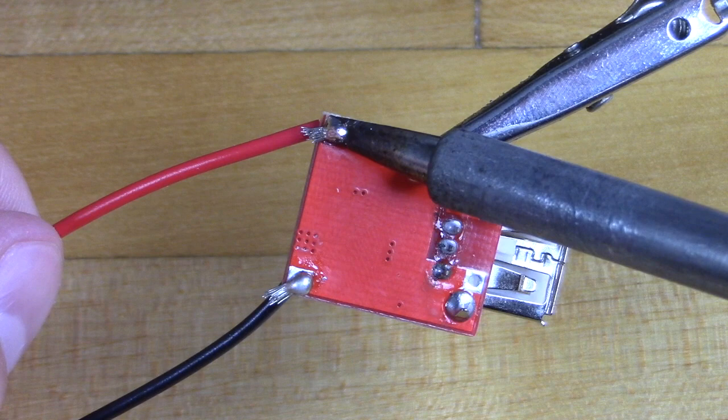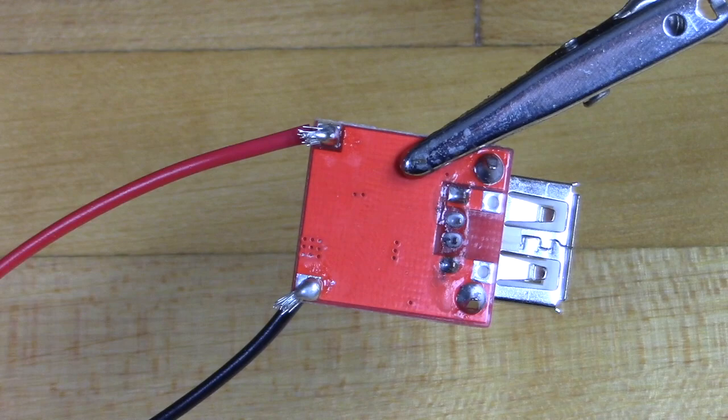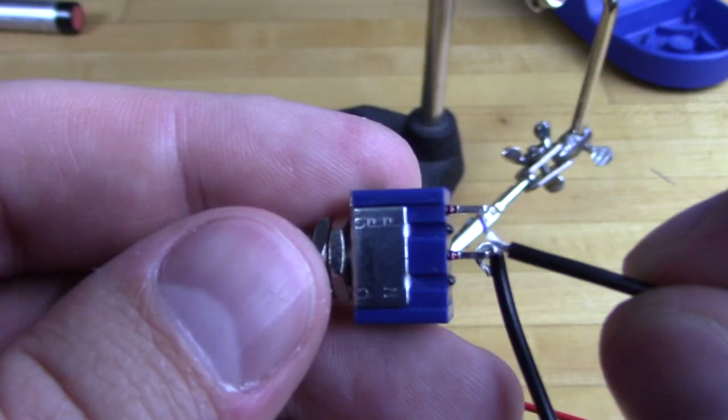Use a loose black wire and loose red wire to attach to the USB board. Red goes to positive, black goes to negative.